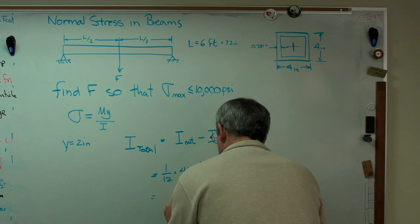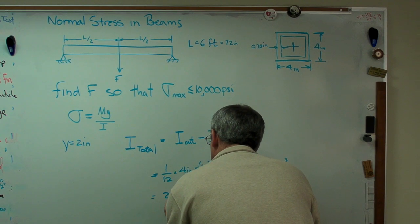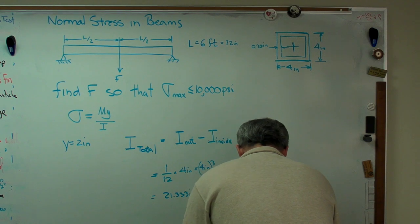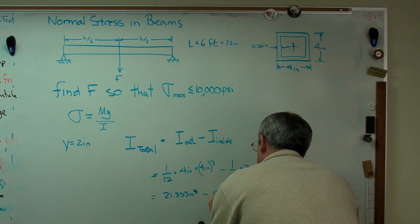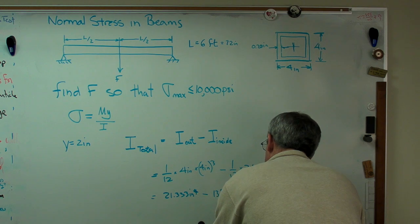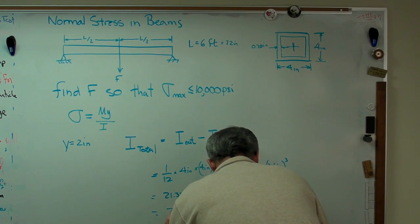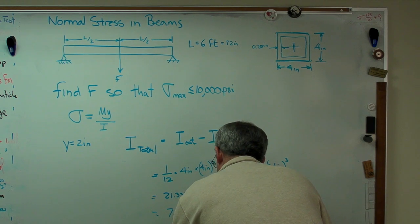Okay, so let's work this out quickly. The first part is 21.333 inches to the fourth. Second part is 13.997 inches to the fourth. And that works out to 7.3365 inches to the fourth.